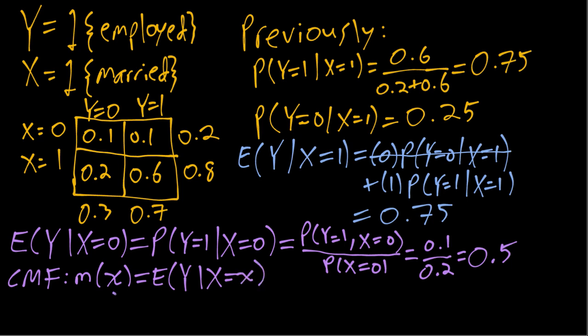It tells us which value to condition on when we're computing the conditional mean. At this point, this is mostly just notation, but it will be very helpful in later chapters when we're doing more than just having a single binary X.